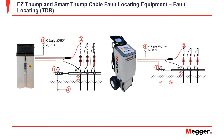For a brief connection overview: first, apply your equipment safety ground to ground. Then, apply your high voltage return lead to the concentric neutral or shield under test. Finally, place your high voltage output lead to the cable under test.